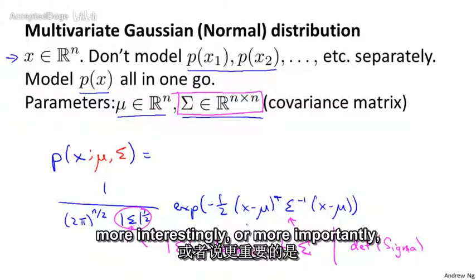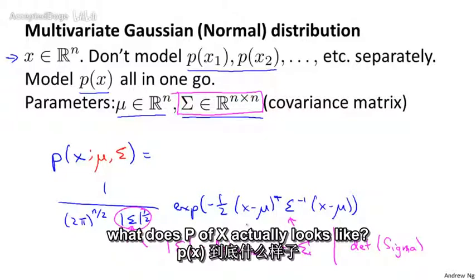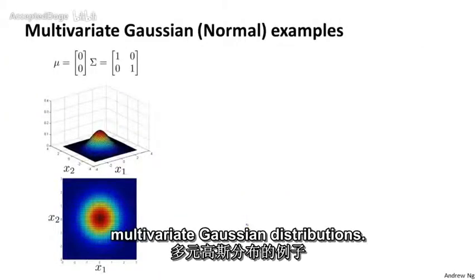And again, just to be clear, in this expression, these sigmas here, these are this n by n matrix. This is not a summation. The sigma there is an n by n matrix. So that's the formula for p of x. But more interestingly, or more importantly, what does p of x actually look like?